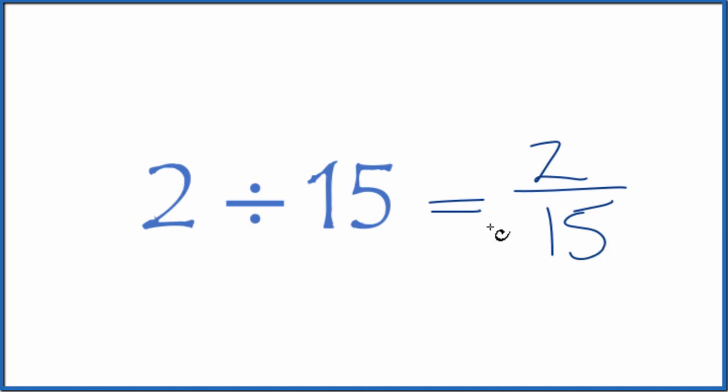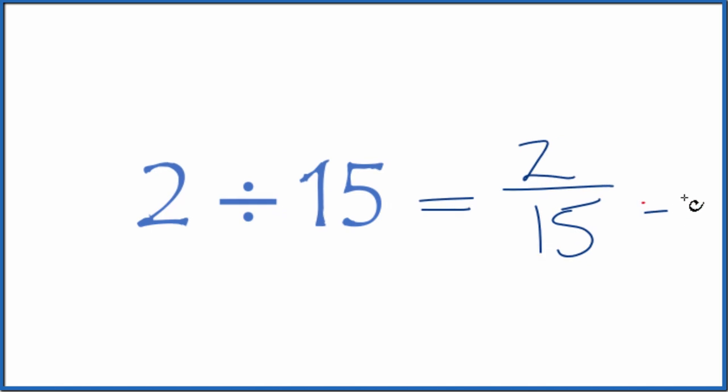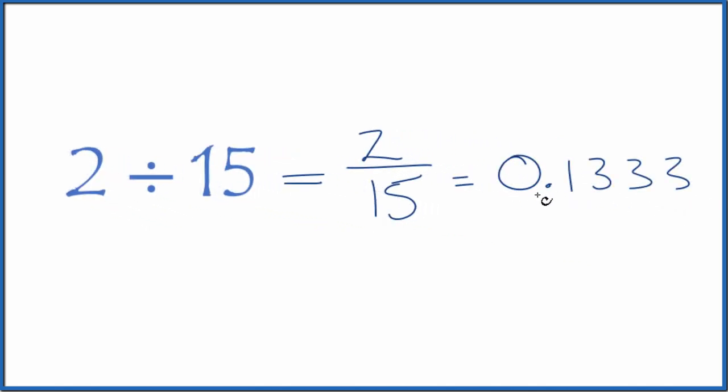You could also take a calculator and divide 2 by 15 on your calculator. You end up with 0.1333. The 3's, they just keep repeating.